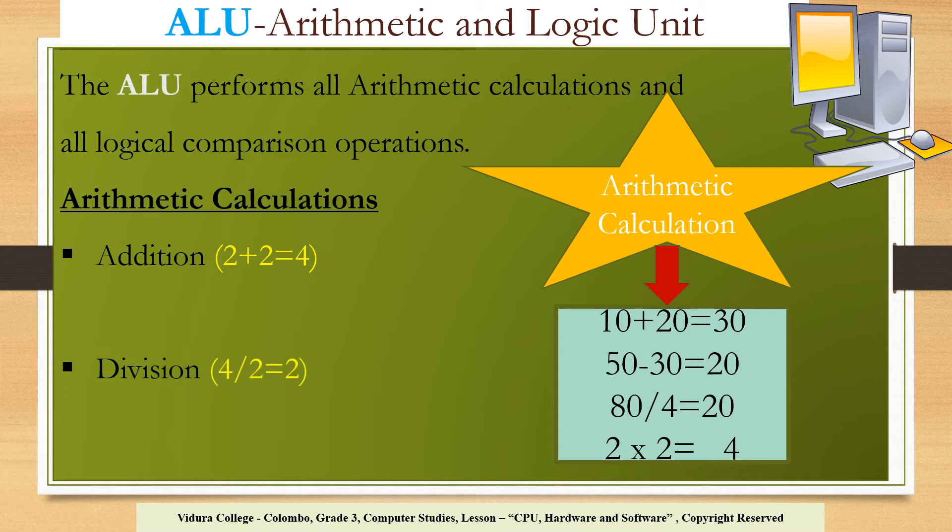Arithmetic operations are addition, subtraction, multiplication and division. Look at the given examples for arithmetic operations. Addition: 2 plus 2 equals 4. Subtraction: 5 subtract 2 equals 3. Division: 4 divided by 2 equals 2. Multiplication: 1 multiplied by 2 equals 2. All these are arithmetic operations.